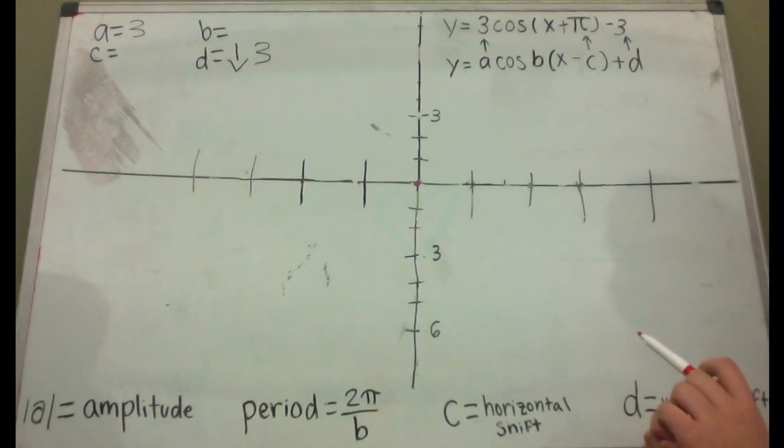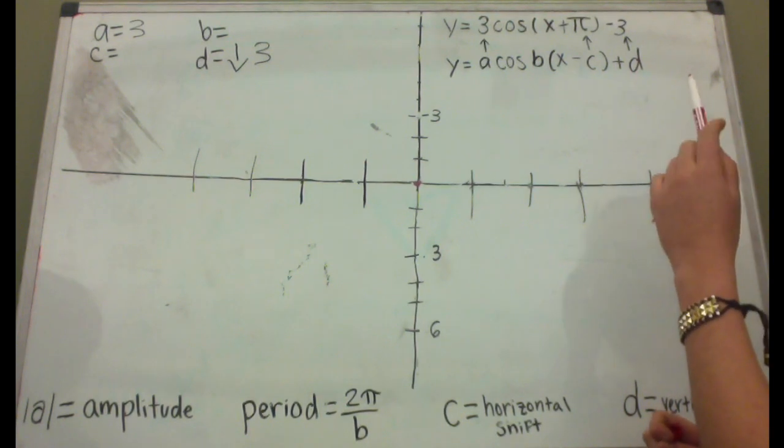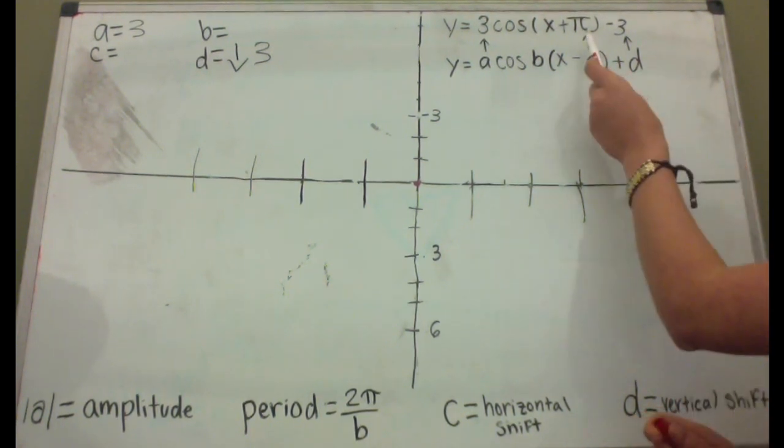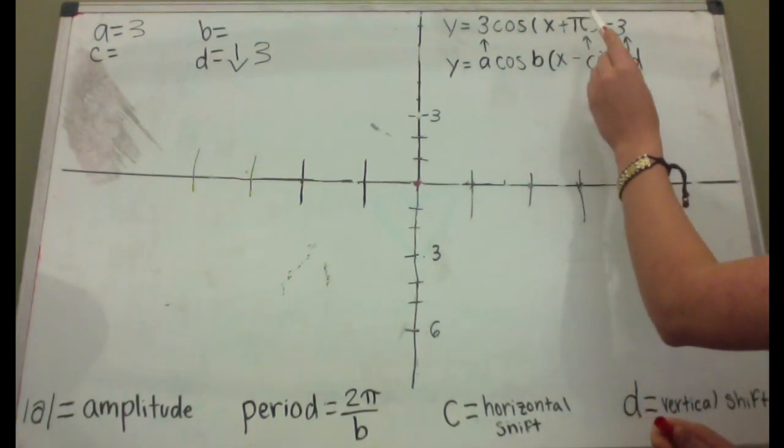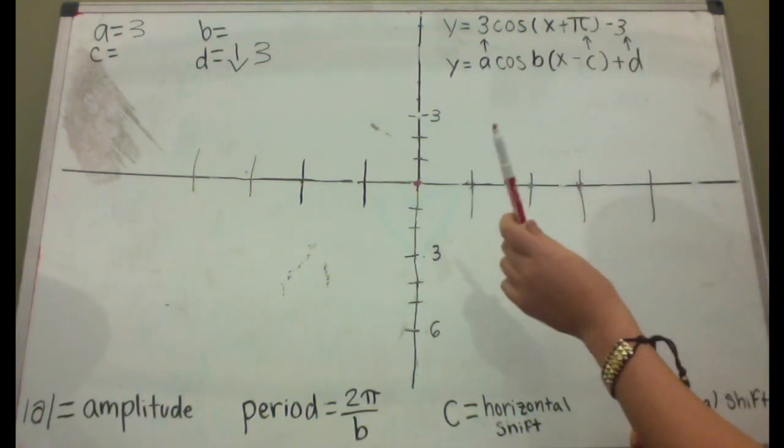However, we don't actually start at the origin because we also have another variable c, or our horizontal shift. Now, whenever you're dealing with the variable c or the horizontal shift of π in this case, you have to take whatever the sign is in front of your variable c and move it in the opposite direction.